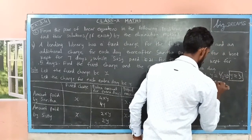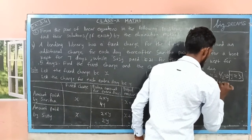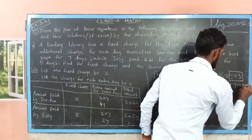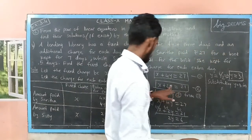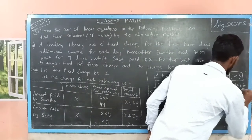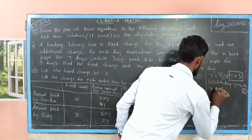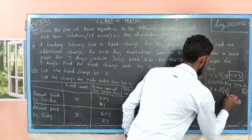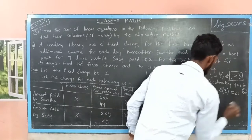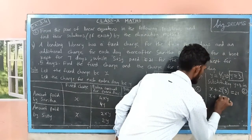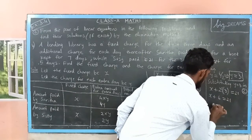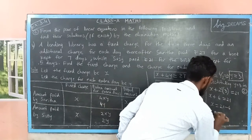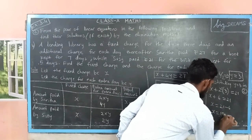Now substituting y equals 3 in the second equation: x plus 2 into 3 equals 21, so x plus 6 equals 21, so x equals 21 minus 6, so the value of x is 15.